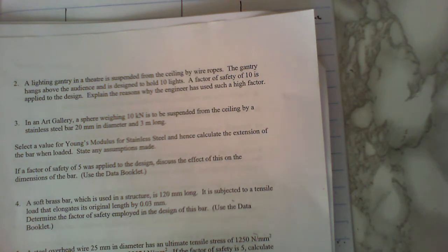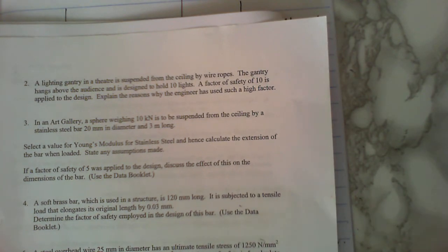So let's read it first and let's look at the information you might need. In an art gallery a sphere weighing 10kN is suspended from the ceiling by a stainless steel bar, kind of similar to what I sketched out. 20mm in diameter, 3m long, select a value for Young's for stainless steel and hence calculate the extension of the bar when it's loaded and state any assumptions.